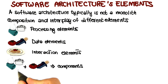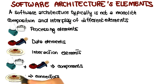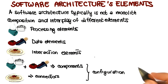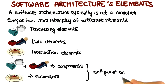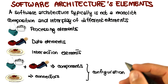Now, the processing elements and the data are contained into the system components, whereas the interaction elements are maintained and controlled by the system connectors. And components and connectors get all cooked together into a system configuration, which models components, connectors, and their relationships.